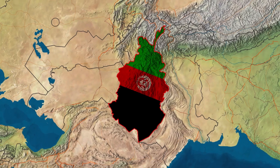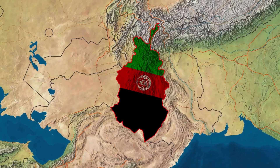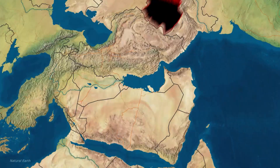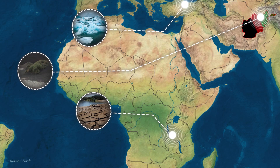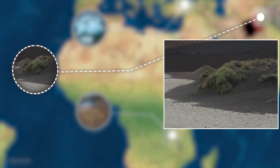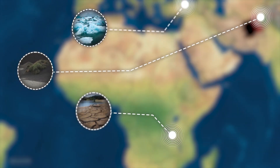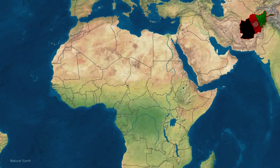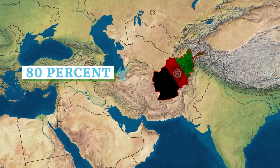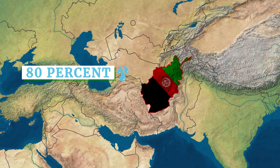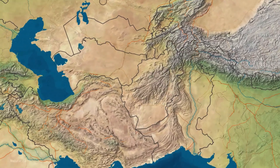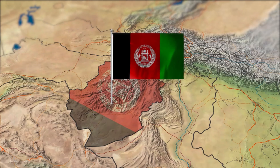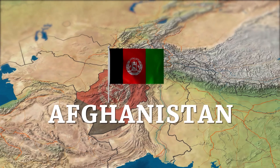Climate change impacts on water resources have been widely observed, and future impacts are likely to cause significant harm to water resources at both regional and global scales. Afghanistan is a country in the western Himalaya which receives 80% of its water resources from snow and glacier melt.